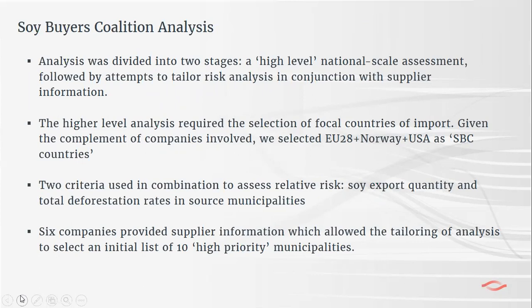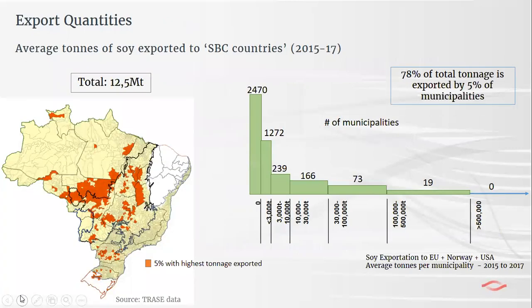Six companies out of the 12 to 15 actually supplied the TRACE team with information from their suppliers under data sharing agreements, allowing us to tailor the higher-level analysis and identify a list of 10 shared high-priority municipalities for coalition attention. For the high-level analysis, we selected a threshold of the top 5% of municipalities with the highest tonnage of exports between 2015 and 2017. That top 5% of municipalities in Brazil is shown on the map, and 78% of the total tonnage exported to Soy Buyers Coalition countries comes from this top 5% of municipalities. Many municipalities export very small volumes.